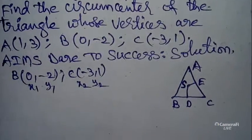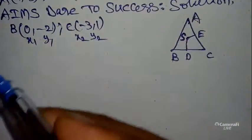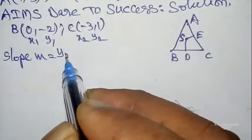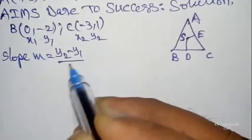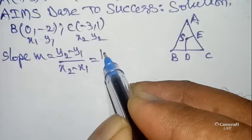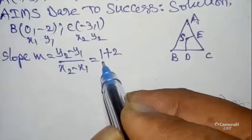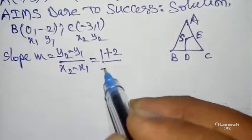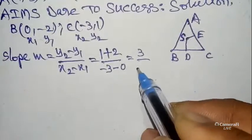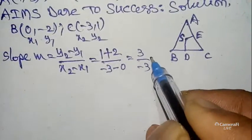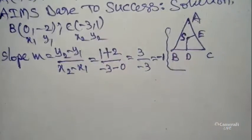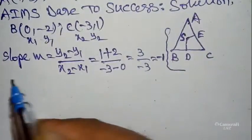Next, find the slope of BC. The slope formula is m = (y2 - y1) / (x2 - x1). y2 is 1, y1 is -2, so 1 minus (-2) is 1 + 2 = 3. x2 is -3, x1 is 0, so -3 - 0 = -3. So slope m = 3 / -3 = -1. The slope of BC is -1.